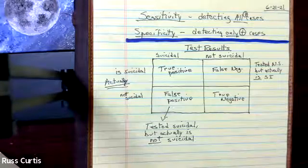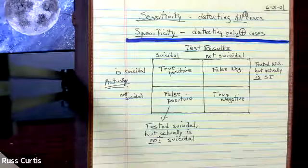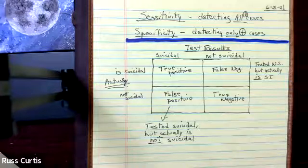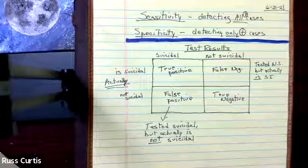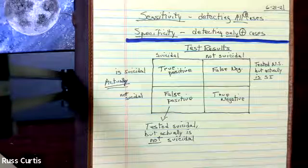We would decrease the sensitivity, meaning we're probably going to miss somebody with severe depression, but we're going to make sure that at a 75 score, that we are capturing folks who really, truly do have suicidal ideation.